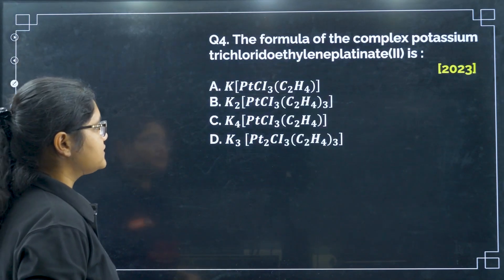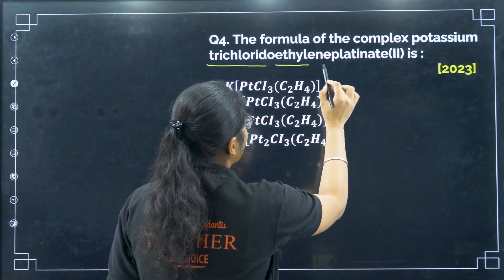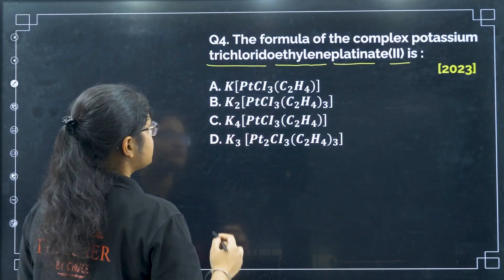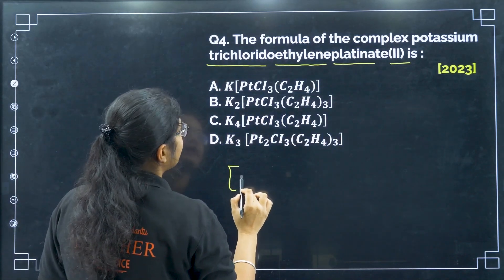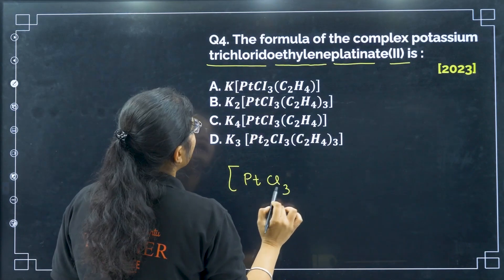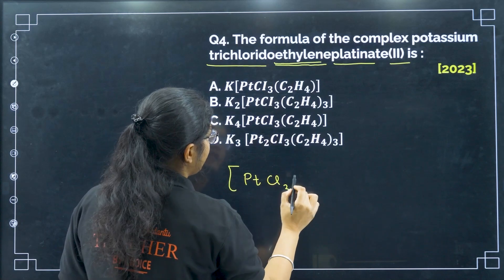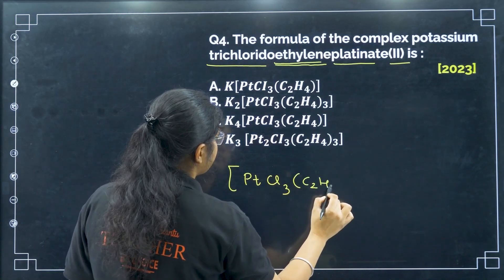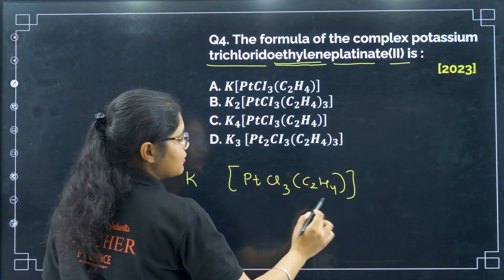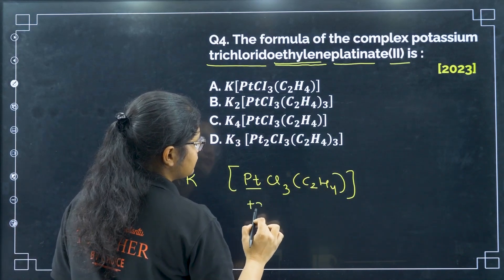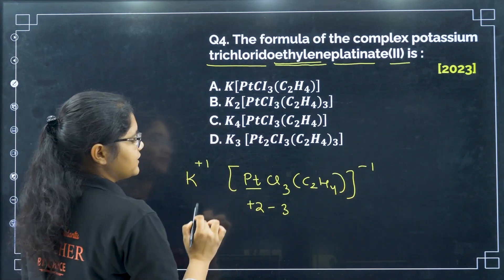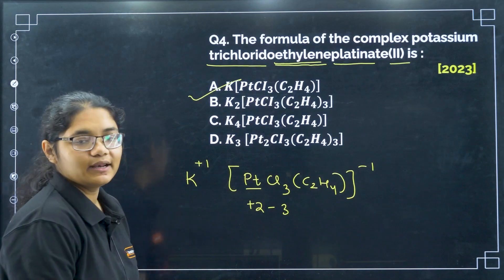Next, the formula of the complex potassium trichlorido ethylene platinate (2) is what? Writing it down: platinum is in plus 2 state, there are three chlorido ligands and one ethylene ligand (C2H4), and potassium is on the outside. The oxidation state of platinum is +2, chlorides give −3, and ethylene is 0, giving a net charge of −1. Potassium is +1, so crisscrossing gives option A.